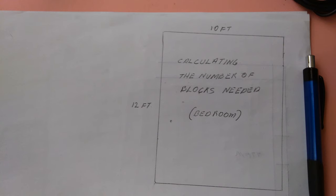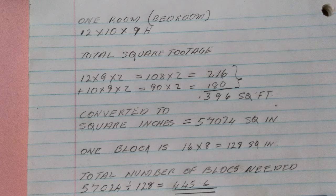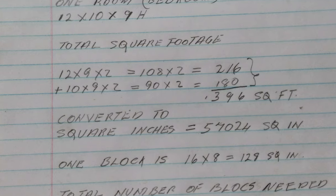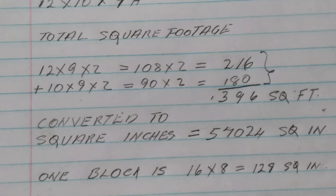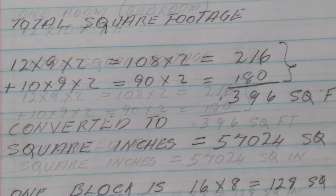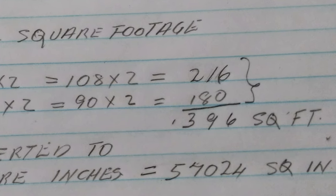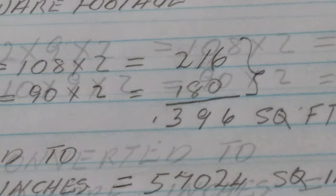There is a much easier way to do this, and I will show you that later on. First, let us calculate the bedroom. Each bedroom is 12 feet by 10 feet by 9 feet tall. When we multiply 12 by 9, we get 108 square feet. Since there are two walls for the 12-by-9 dimension, that is multiplied by 2, giving us 216 square feet for those two walls.